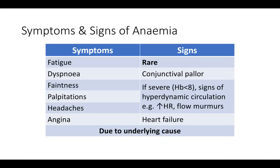The symptoms of anemia are quite vague — fatigue, shortness of breath, faintness, palpitations — which is one of the reasons we do a full blood count on anyone with symptoms who comes into hospital. Some rarer findings include conjunctival pallor and, rarely, heart failure secondary to anemia. If someone has heart failure, you may want to cautiously give a blood transfusion alongside furosemide to offload them.